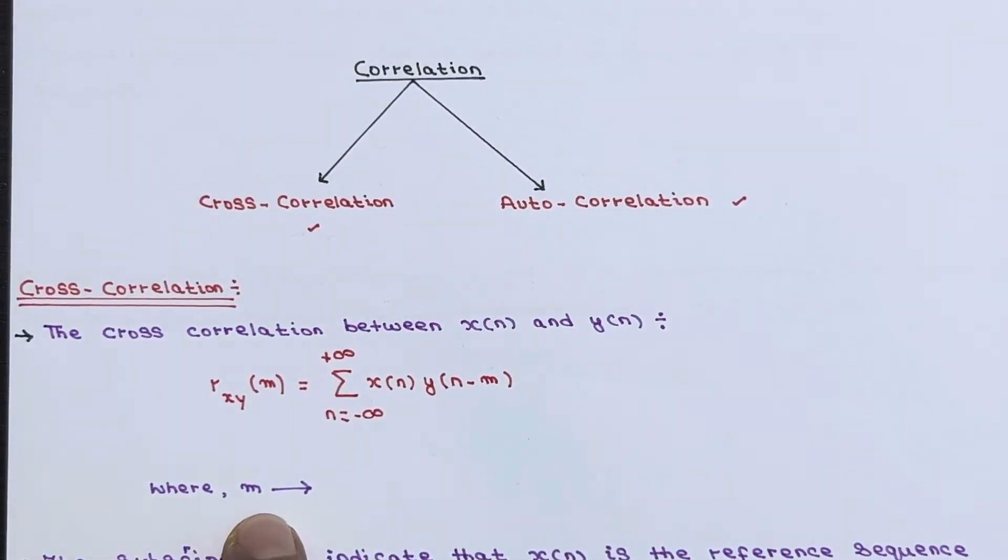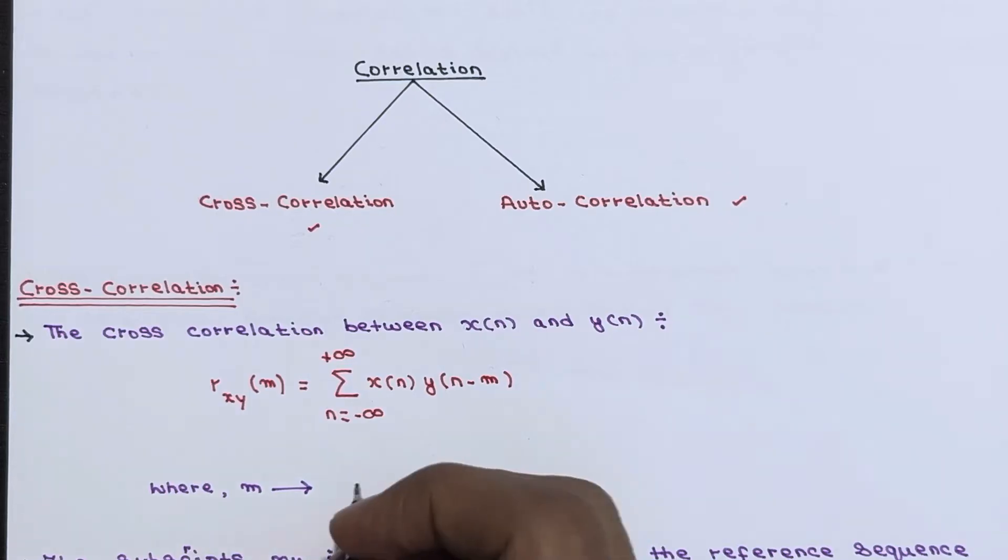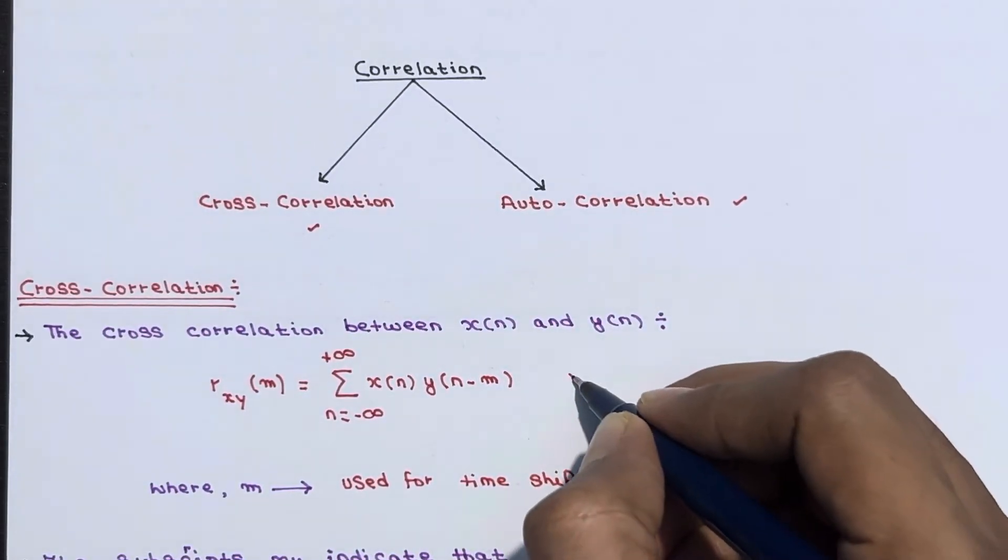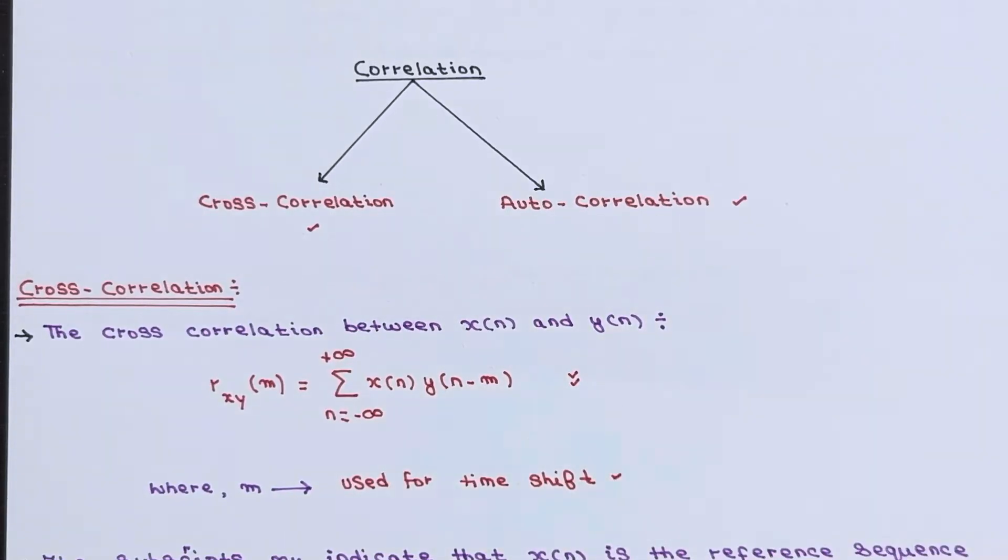And this m, this m is nothing but a variable used for time shift, a variable which is basically used for time shift. So this is a mathematical definition for cross-correlation.